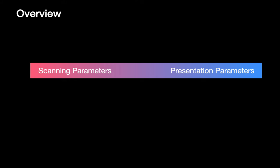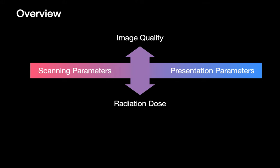Because scanning parameters are established before we scan our patient, if we're not happy with them and want to change them but have already scanned the patient, we'd need to bring the patient back and re-scan them. On the other hand, we can readjust presentation parameters all we like after the fact without re-scanning. Both types influence image quality and the radiation dose we subject our patient to.